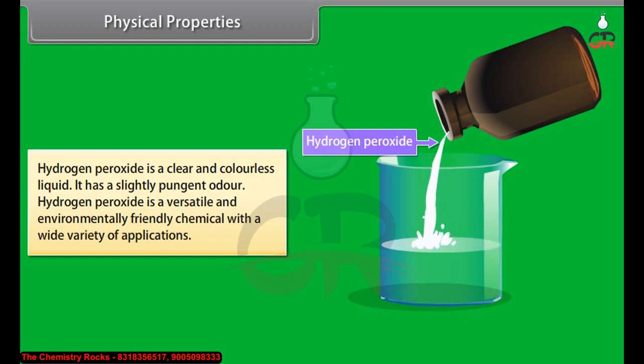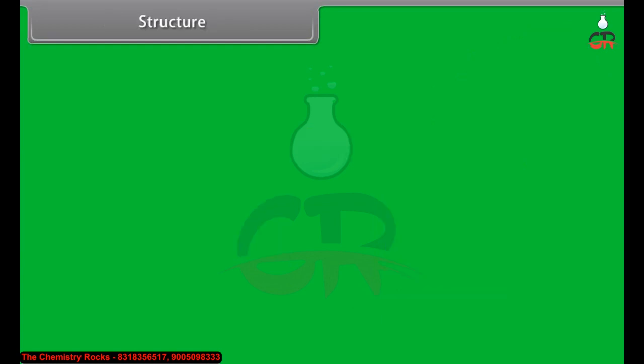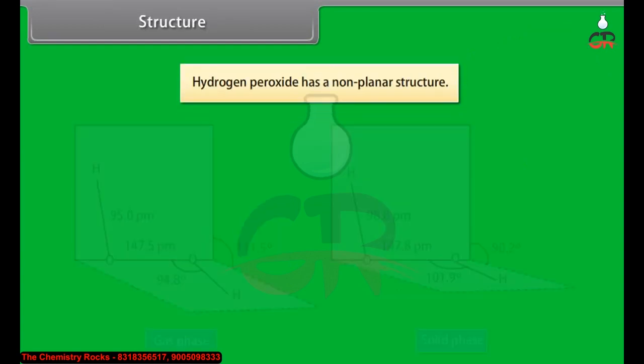Physical properties: hydrogen peroxide is a clear and colorless liquid. It has a slightly pungent odor. Hydrogen peroxide is a versatile and environmentally friendly chemical with a wide variety of applications.